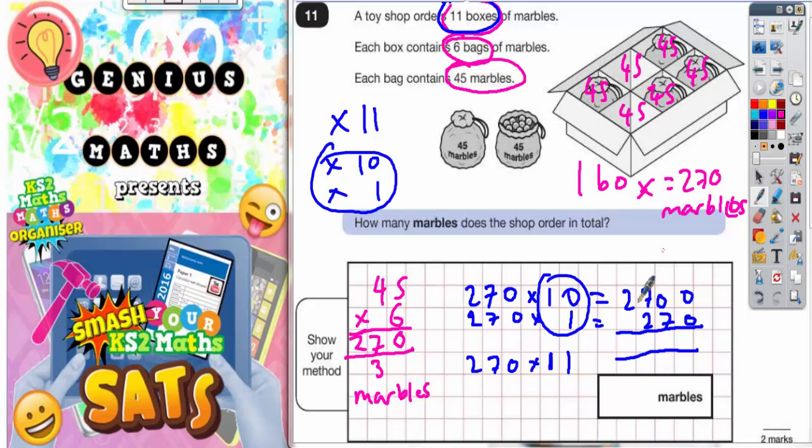Let's work that out. 0 plus 0 is 0. 0 plus 7 is 7. 7 plus 2 is 9. And then just the 2 on the end, 2 plus 0 is 2. The final answer is 2,970 marbles.